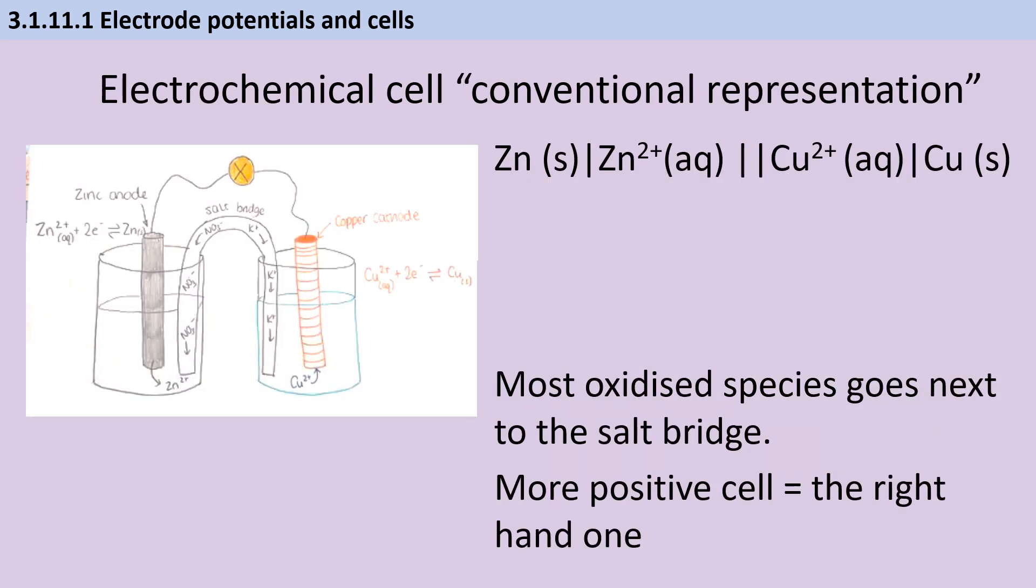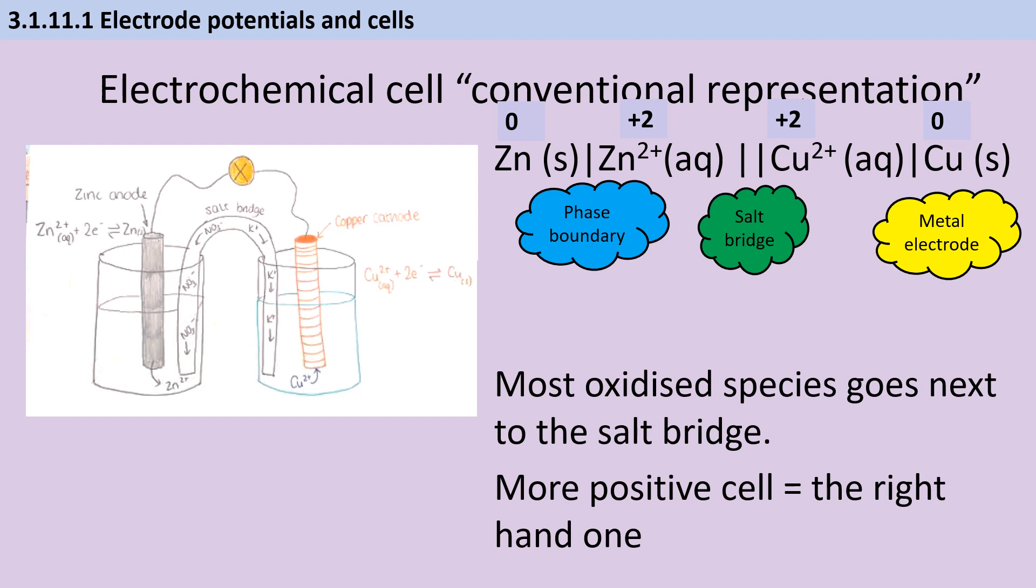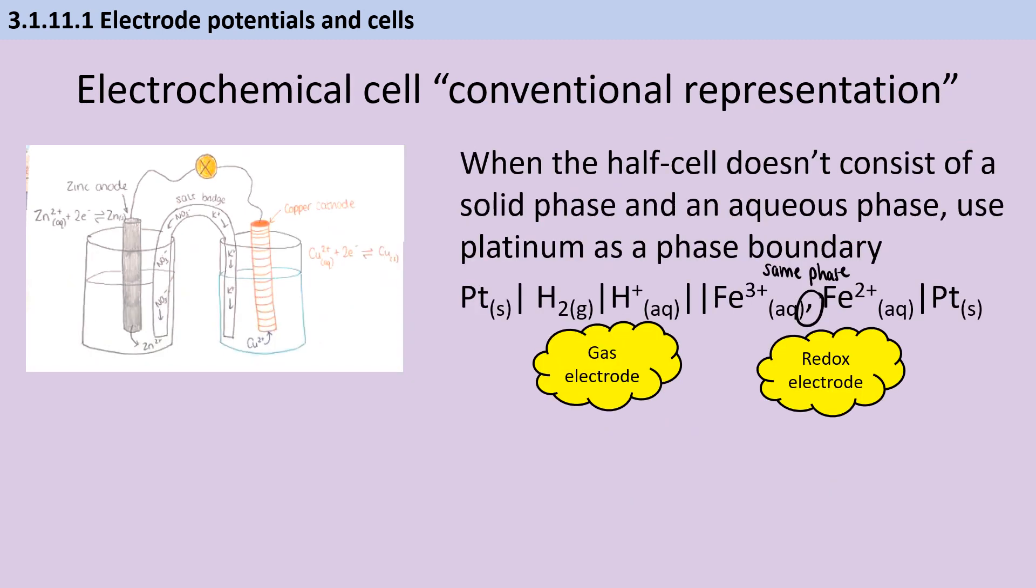An electrochemical cell made from two half cells can be represented by this conventional representation. In this, we use a double vertical line to represent the salt bridge, and then we use single vertical lines to represent phase boundaries, for instance, between these solid electrodes and these aqueous solutions. When deciding where to put the different species, we always put the most highly oxidised species nearest to the salt bridge. So in this instance, the solid metal electrodes are on the outside, and the aqueous ions are on the inside. If I'm showing the representation for an electrochemical cell that is actually going to generate a potential difference, then my more positive E-value is going to go on the right-hand side. When the half cell itself doesn't consist of a solid metal electrode, I may need to use platinum as a phase boundary. If I have two different species that are in the same phase, for instance, two different ions in a redox electrode, I separate these with a comma.